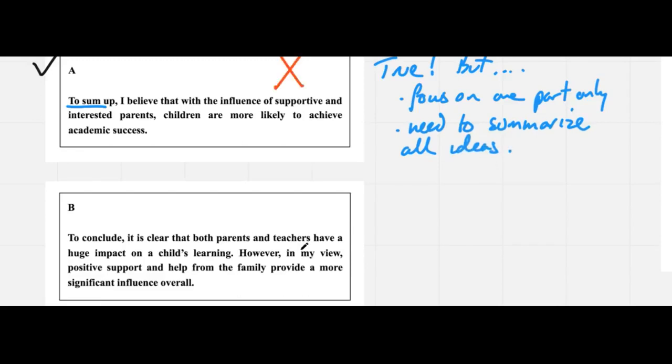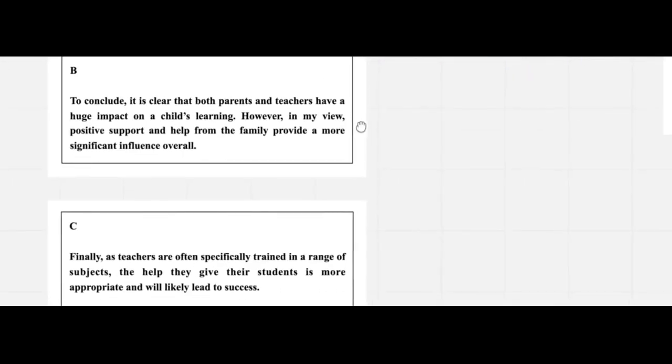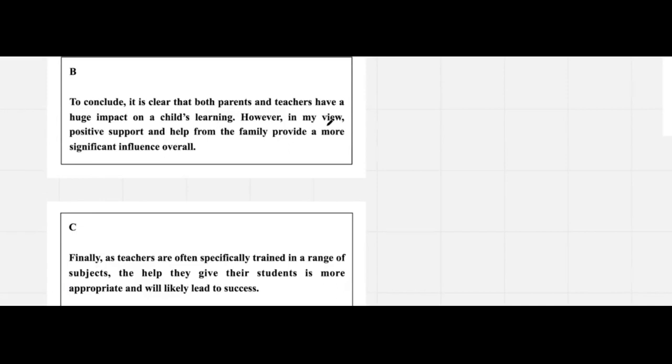Let's go on to B. 'It is clear that both parents and teachers have a huge impact on a child's learning. However, in my view, positive support and help from the family provide a more significant influence overall.' I'll put a line in to actually divide up two sentences—sentence number one and sentence number two.